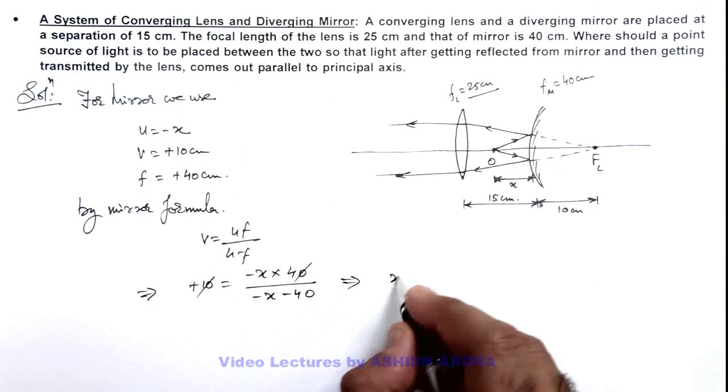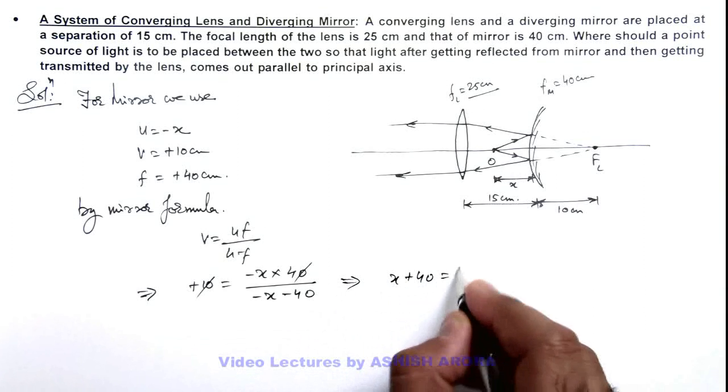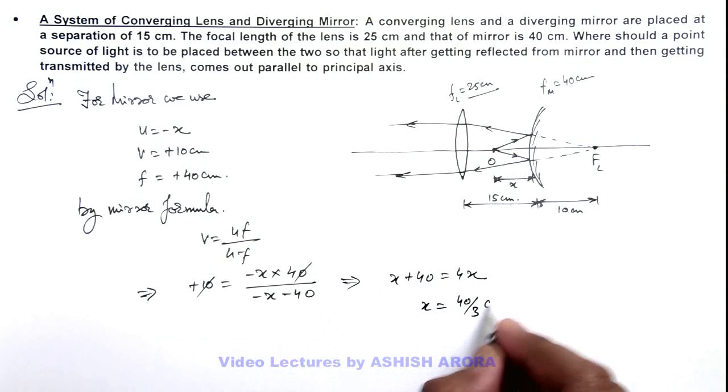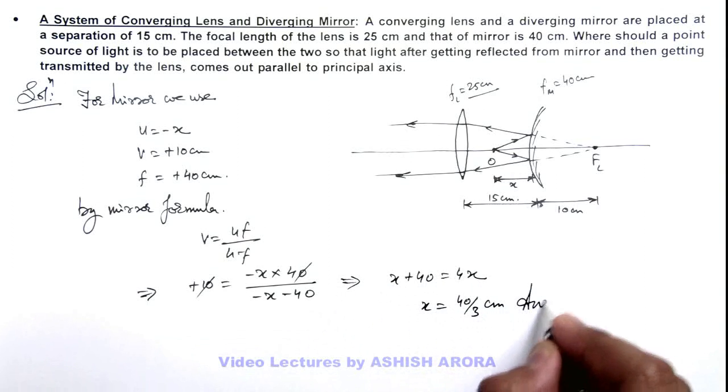And solving this we get x plus 40 equals 4x. So this gives us x equals 40 by 3 centimeters, that will be the answer to this problem.